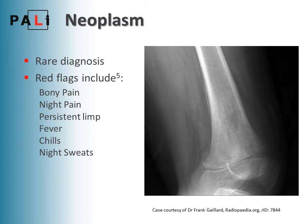Neoplasm is fairly rare, but the most common bone tumours in children are osteosarcoma and Ewing sarcoma. Red flags in the history include bony pain, night pain, a persistent limp, fever, chills, and night sweats. Pathological fractures can be caused by minimal or no trauma, and you get disruption in the cortex. Look for periosteal reaction on x-ray. Five-year survival is quoted as 60–80% for a local tumour, but much worse with metastatic disease.